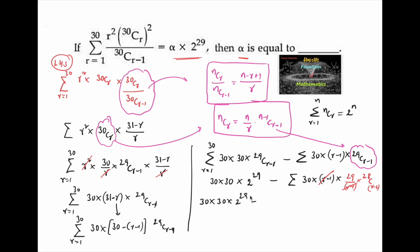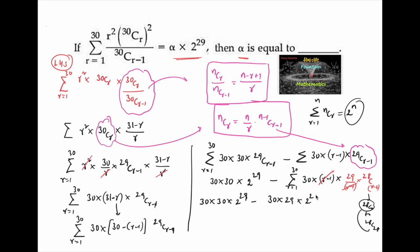For summation of C(28, r-2) where r = 1 to 30, when r = 1 it is not valid, so we start from r = 2. When r = 2 we get C(28,0) and when r = 30 we get C(28,28). This summation also equals 2²⁸. So the second term is 30 · 29 · 2²⁸.